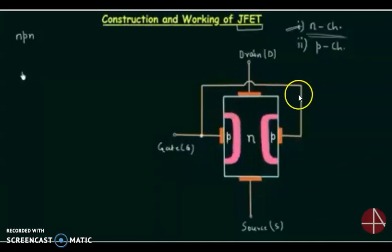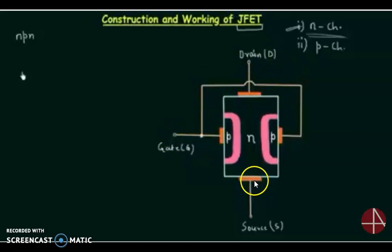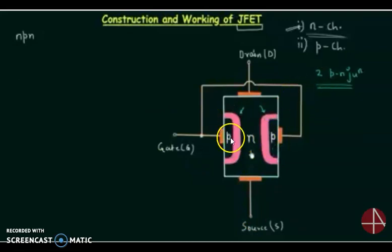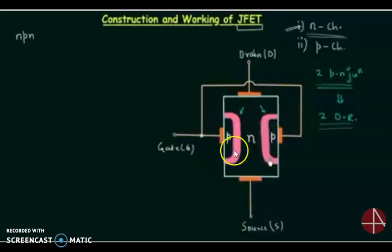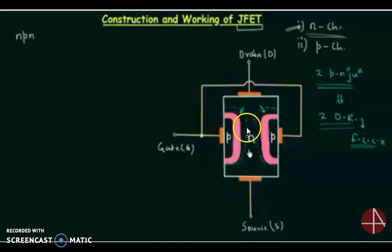For N-channel JFET: the major portion is N, with P layers on both sides connected through the Gate terminal. Here is the Drain at top and Source at bottom — that is the construction. There are two PN junctions formed, one on each side. Due to these two PN junctions, two depletion regions are formed. The dotted lines in the diagram represent those depletion regions.